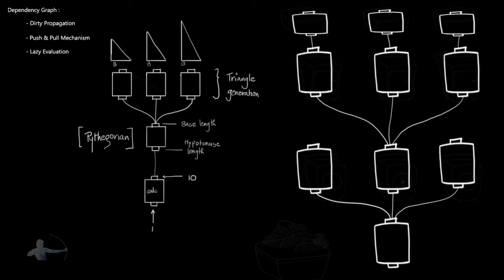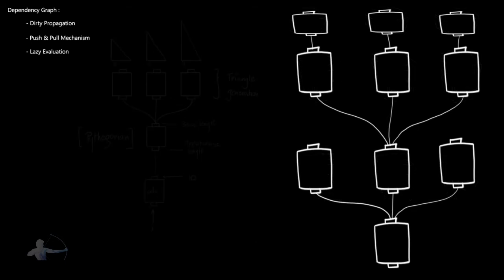Now we will see in our dependency graph what exactly happens when we supply a value. Before understanding the complete workflow, we will quickly dissect a dependency graph node and see what is inside it. A dependency graph node has some inputs and may have one or more outputs. In this case it has three inputs — I1, I2, and I3 — and two outputs, O1 and O2.